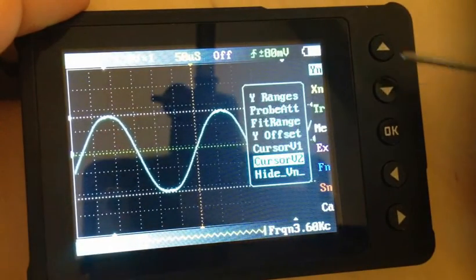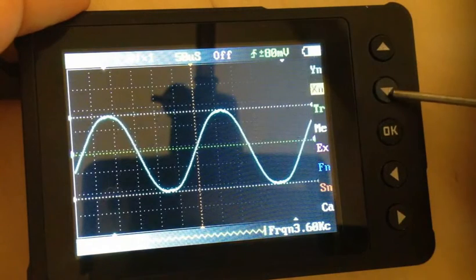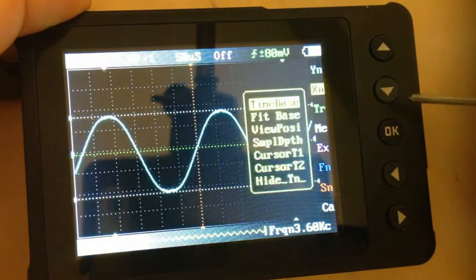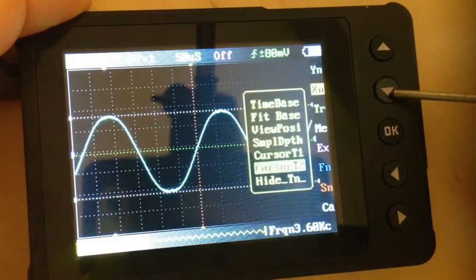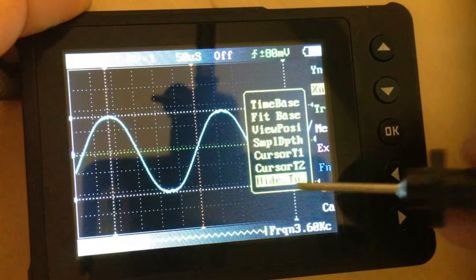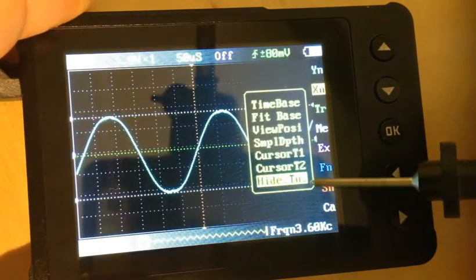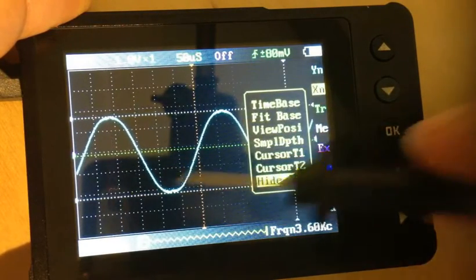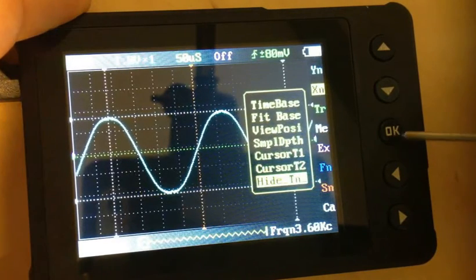Now let's have a look at the X cursors. So we'll select that. The cursors don't seem to be visible, so let's turn on and off the hide cursor here. We'll go hide TN. Click on the right arrow until these two vertical cursors show up. Good.